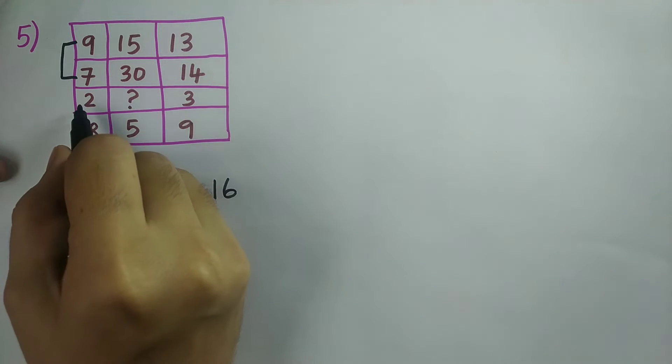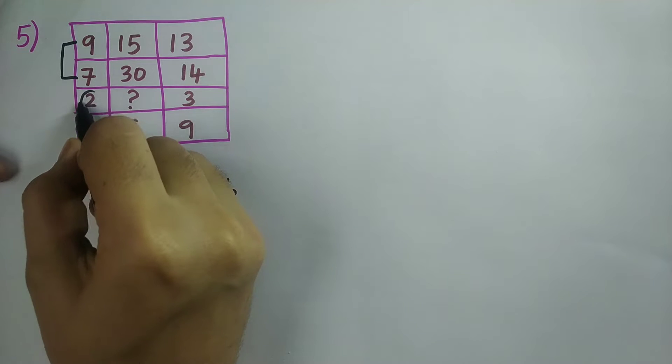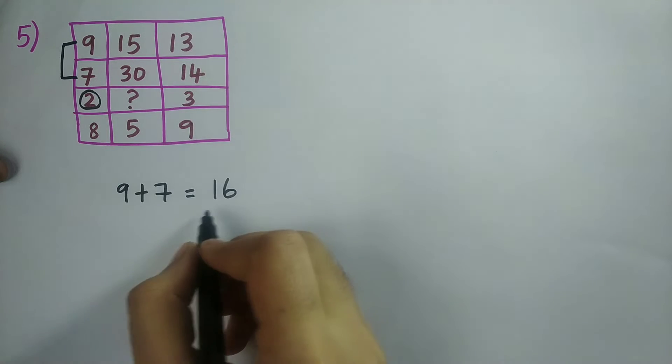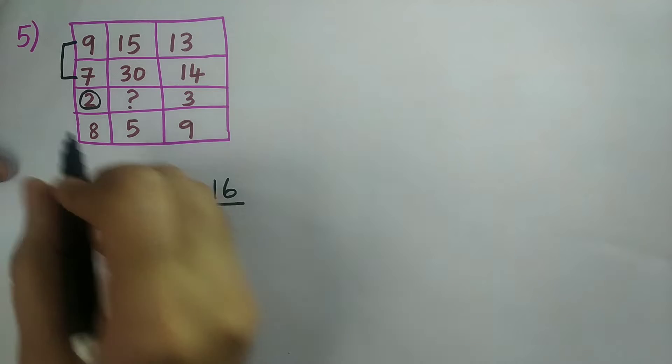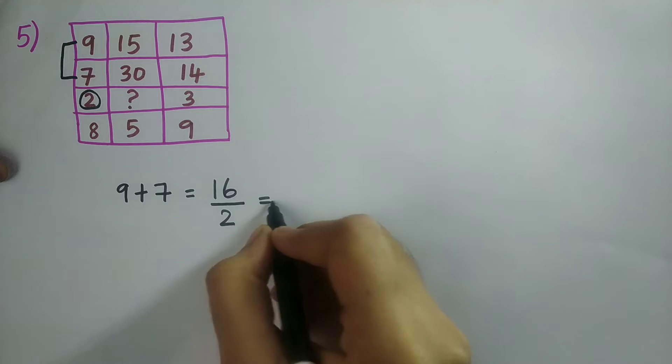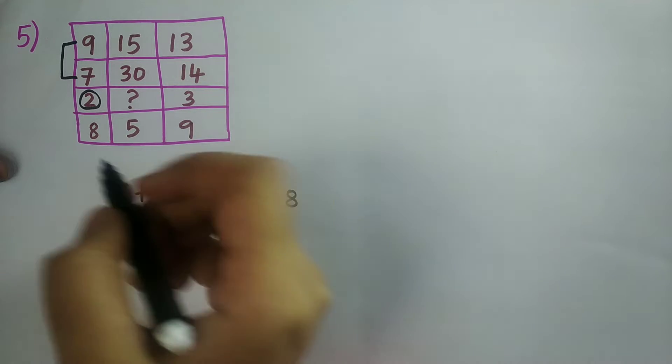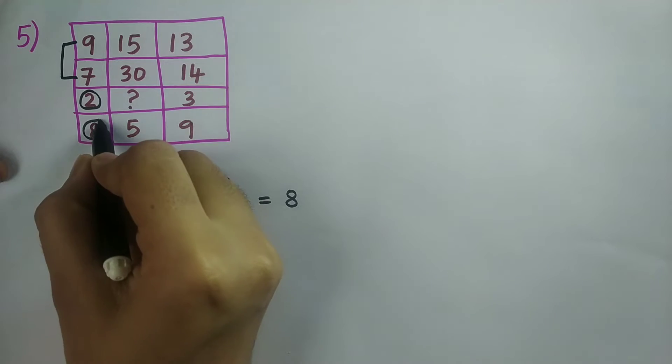And then I should divide that number with this number. So 16 divided by this number 2 which is equal to 8. So I am getting the last row's value.